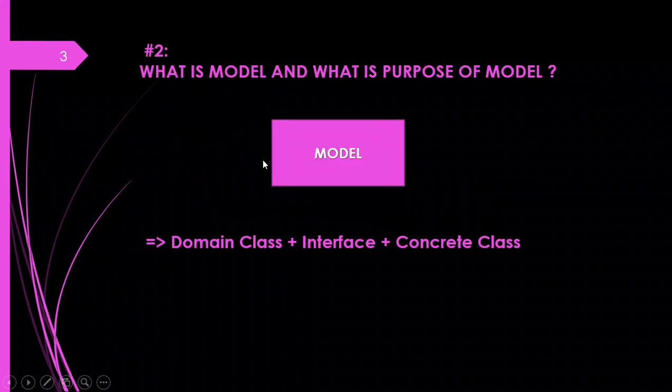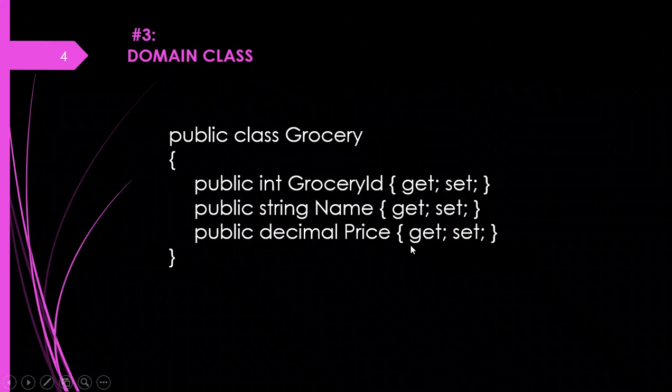As we saw in the previous slide, a model is something which has domain class plus interface plus concrete class. A domain class alone is not enough. A model also contains classes which are called POCO classes — Plain Old CLR Objects — which do not depend on any framework-specific base class. The model also contains classes that manage the data.